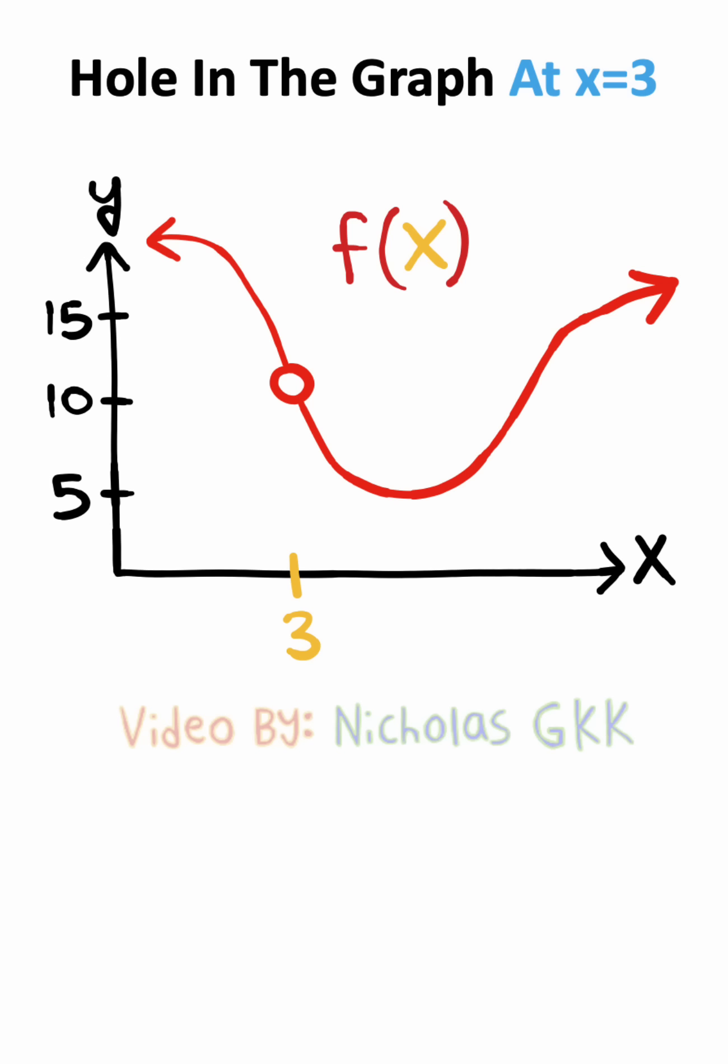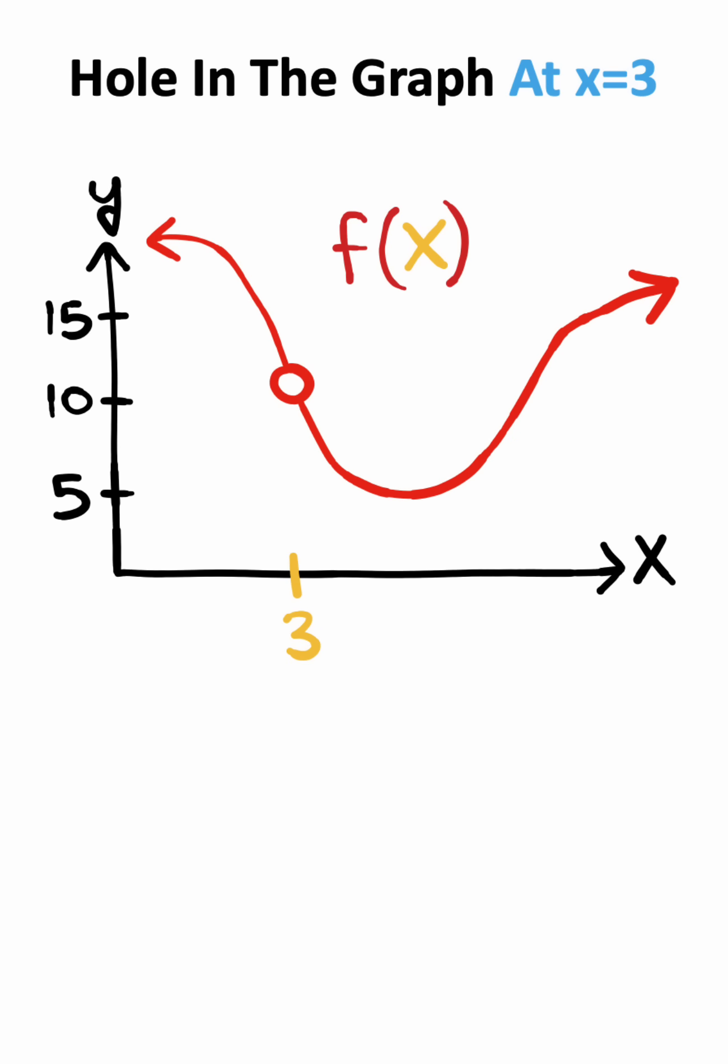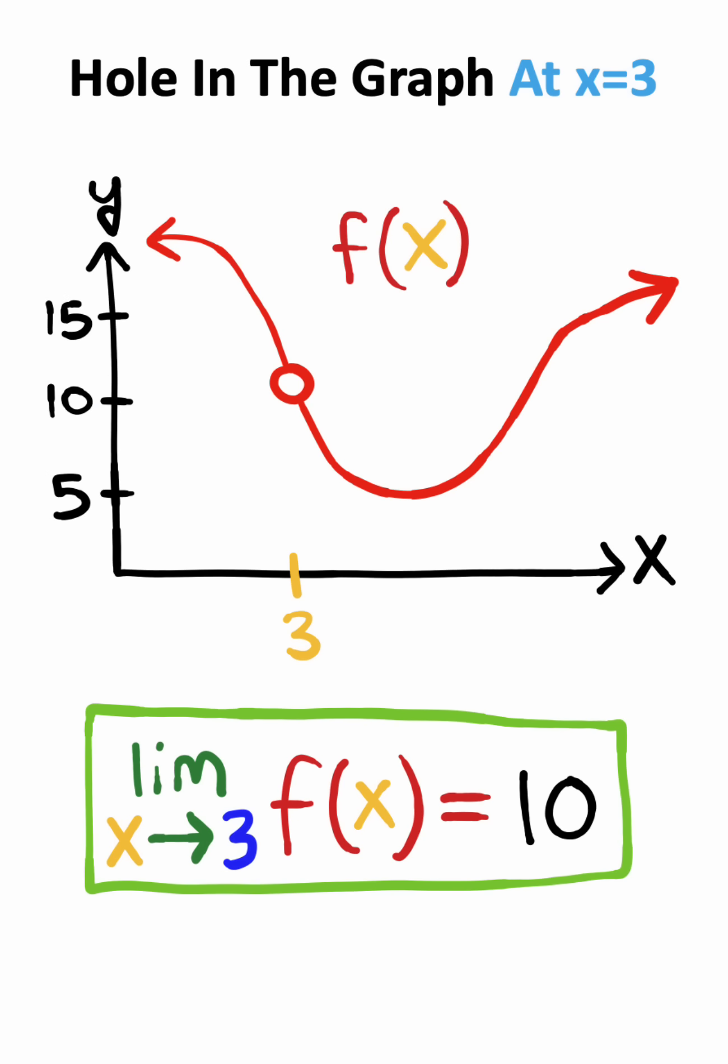So let's say we had a function with a hole in it. Plugging in 3 would give us no solution. But what if we instead set up a limit? Well in this case we would only approach 3, so this would give us a legitimate answer.